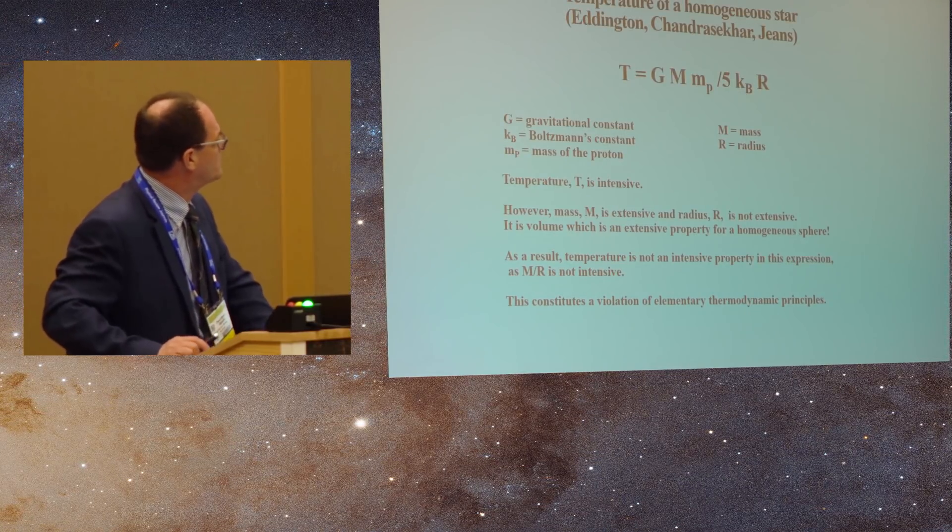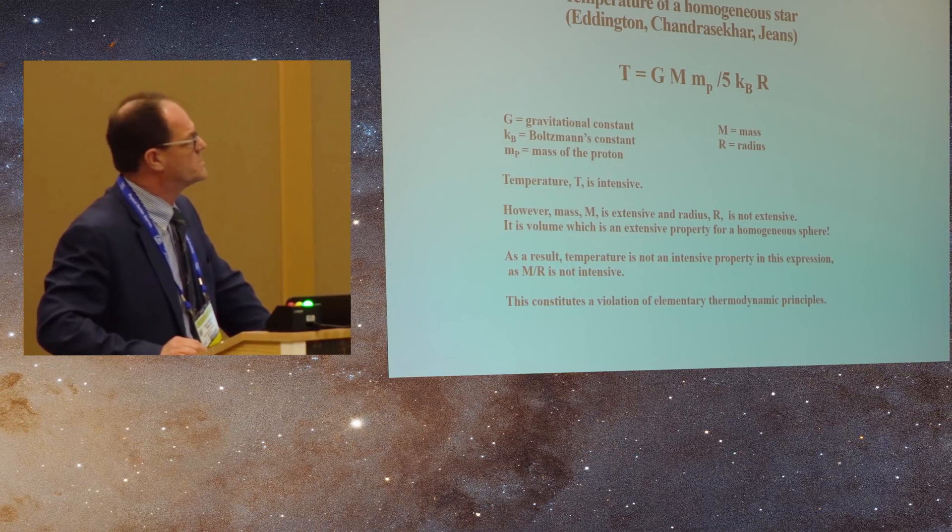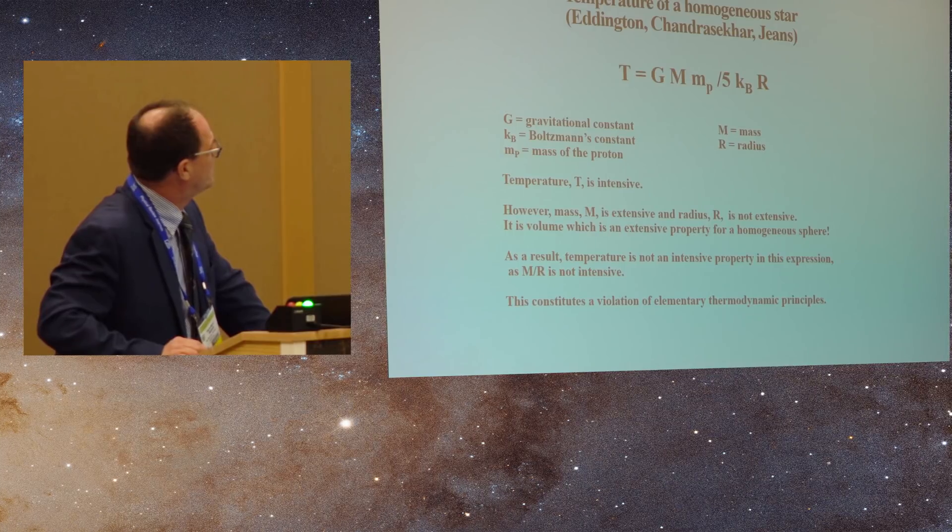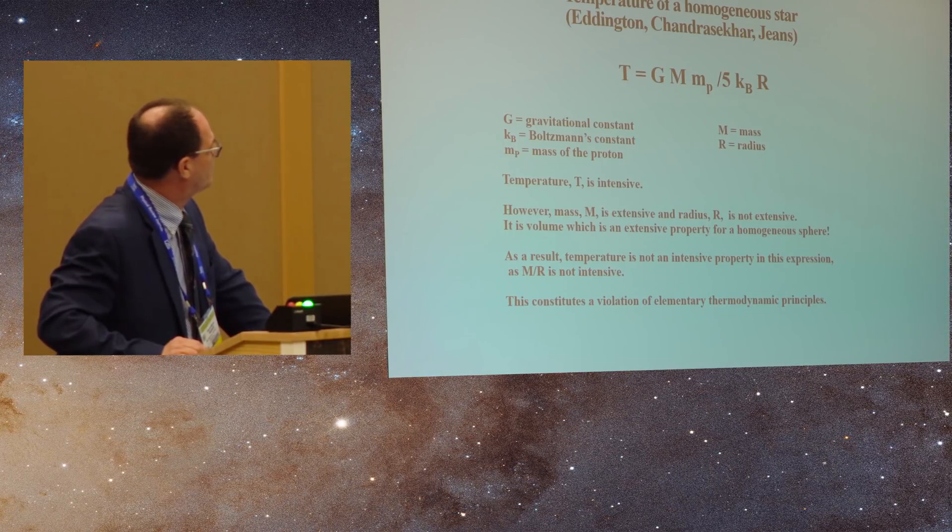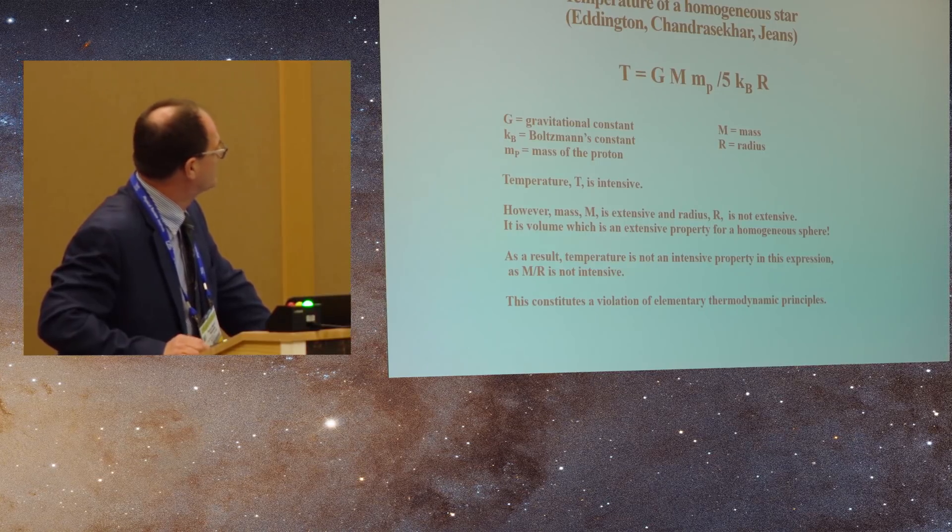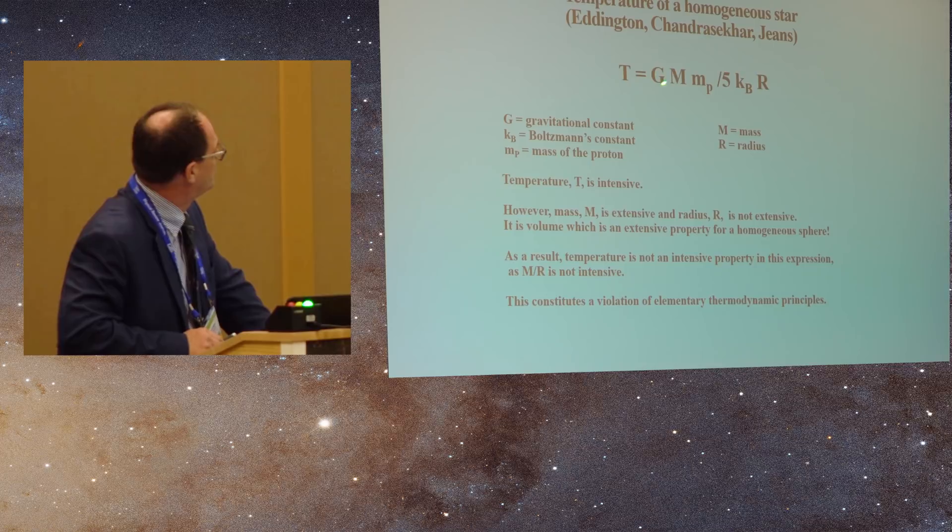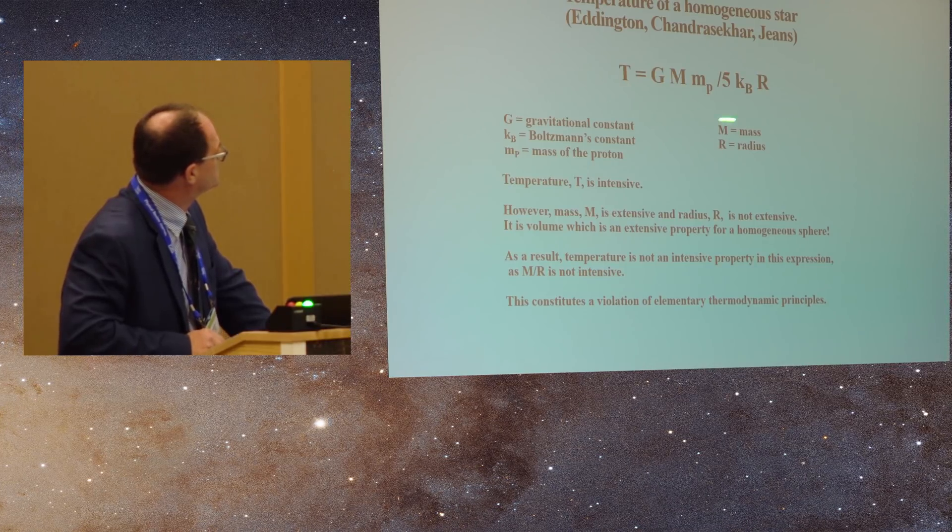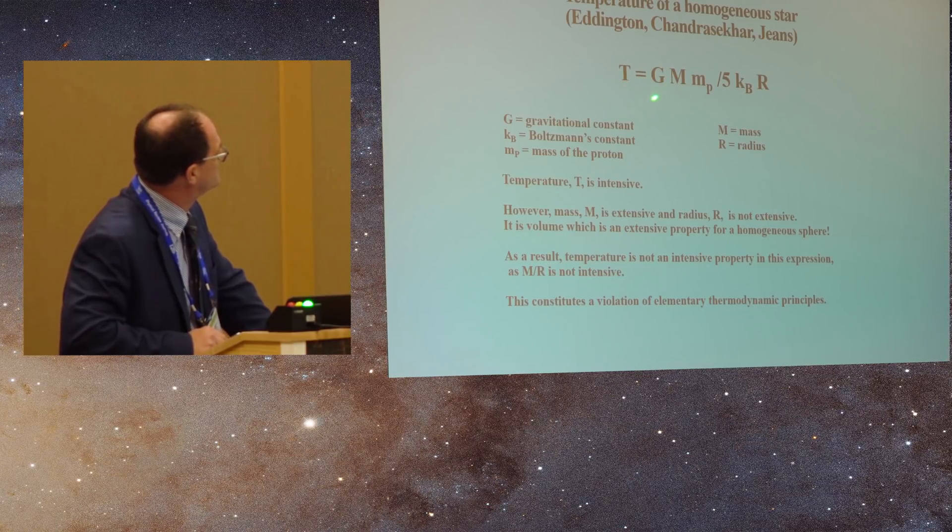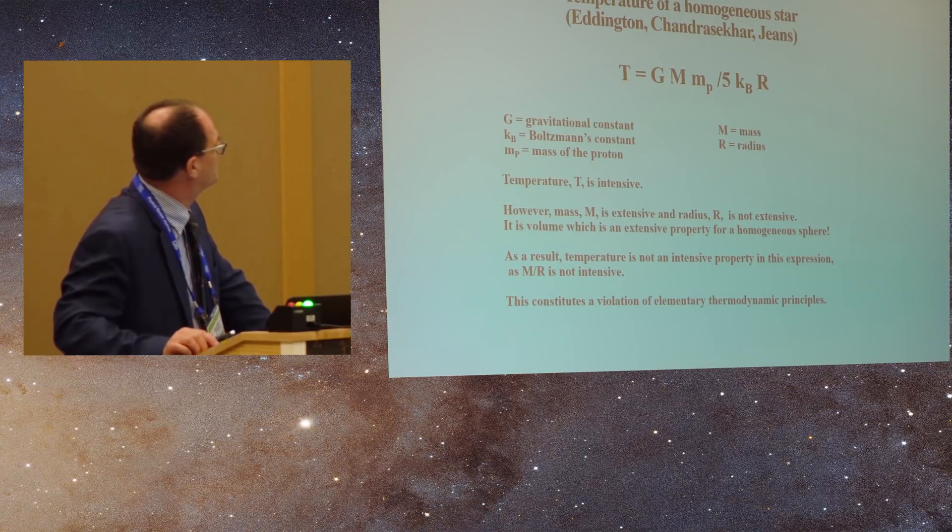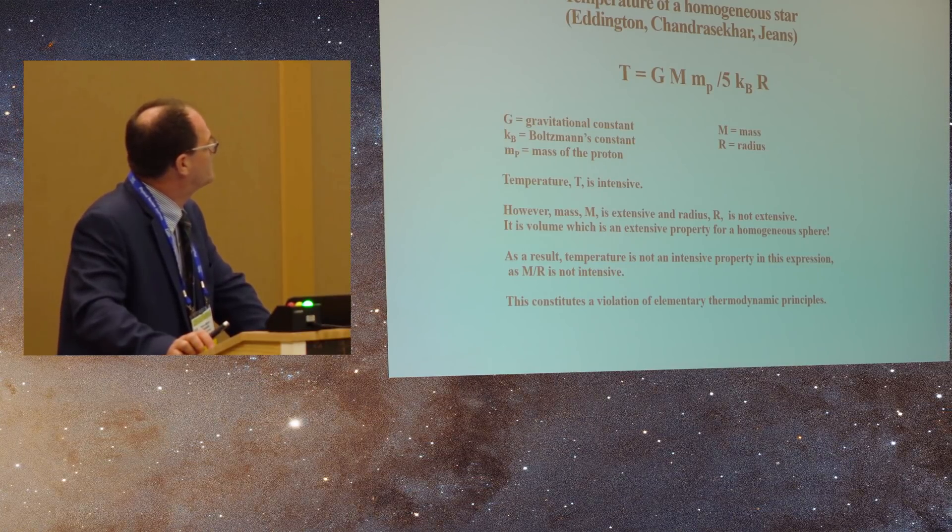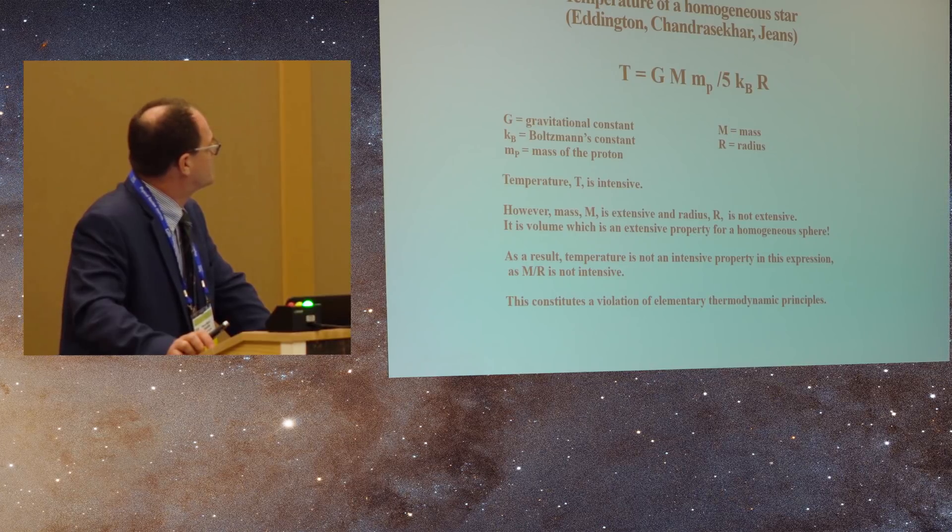So now you look at the equation for the temperature of a star. This is for a homogeneous sphere. And this equation was first proposed by Eddington and then it was followed by Jeans and Chandrasekhar. And you can easily find this in their textbooks. And so this is for a homogeneous mass. The temperature for a self-gravitating mass is equal to the universal constant of gravitation, the overall mass, the mass of the proton, divided by 5 times Boltzmann's constant times the radius.